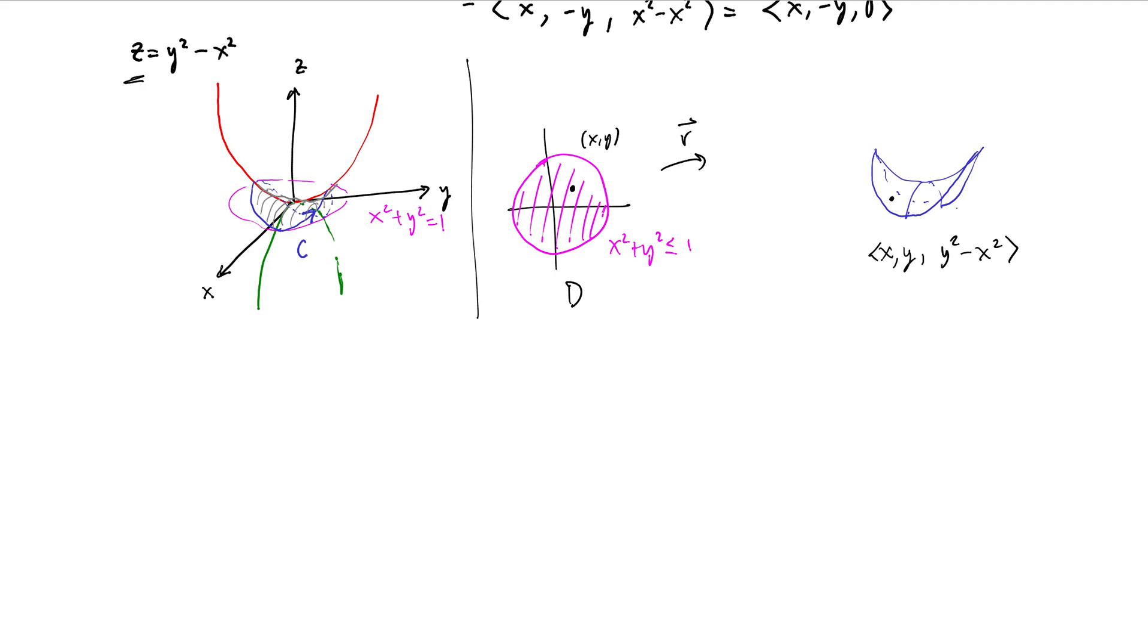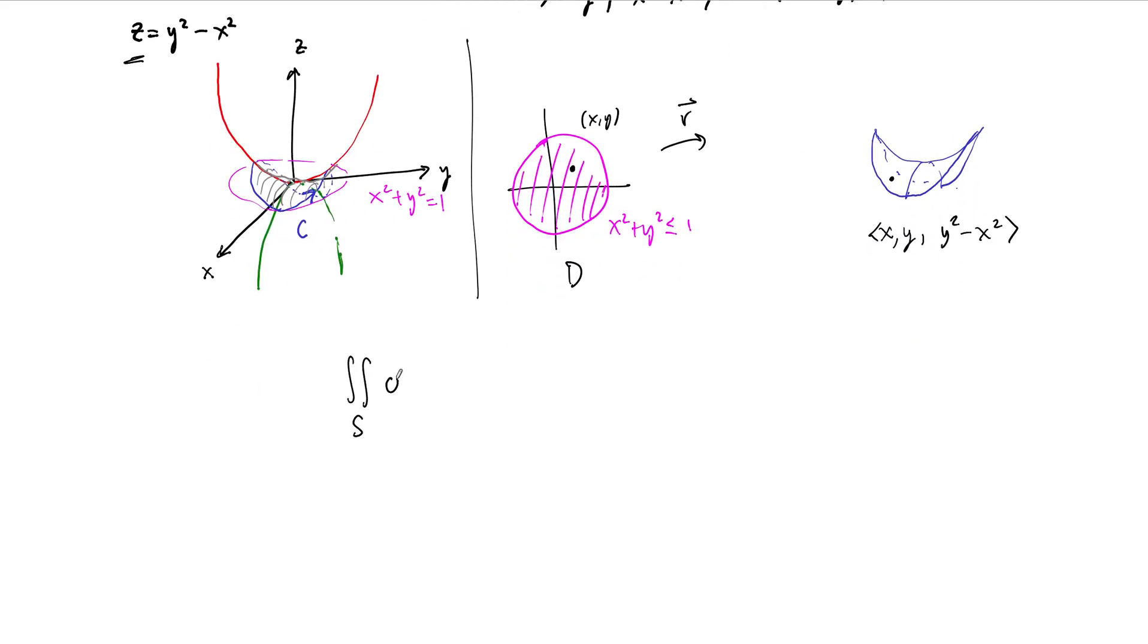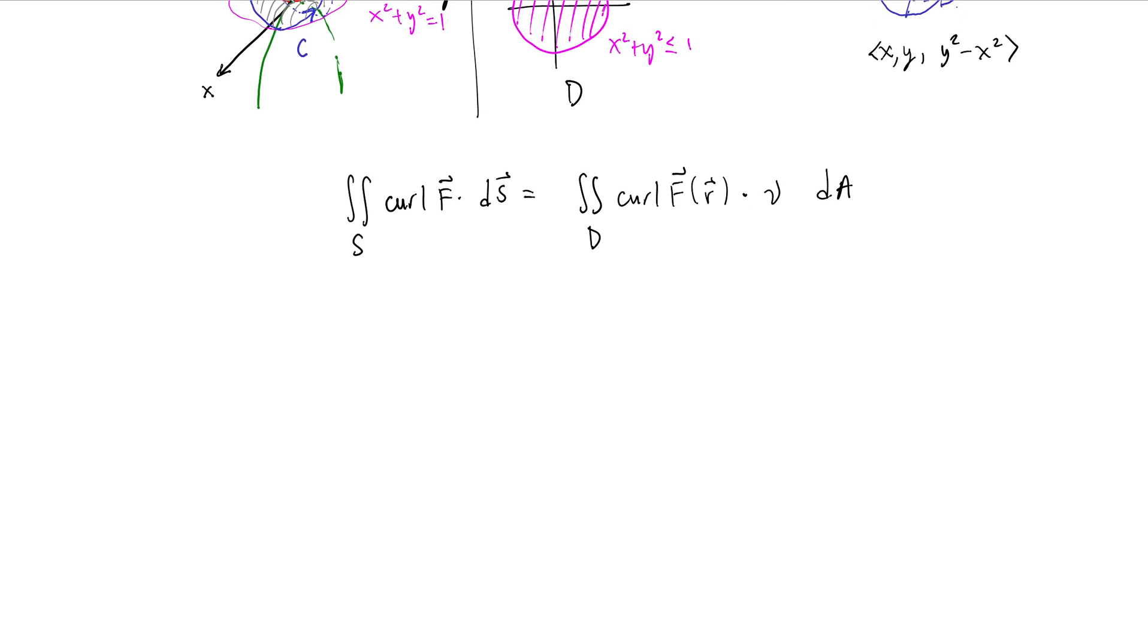And what we need to do is we need to compute the normal vector to the surface because the way that we're going to compute this is that the double integral along our surface of the curl of f dotted with ds is going to be computed on the parameter domain. So now that's starting to smell like polar coordinates. It's going to be computed as the curl of f of r dotted with the normal vector nu, dA. So integrated over the parameter domain over here. That means we need to compute nu. Nu is r sub x crossed with r sub y. So let's compute this by first writing our r again, and then we can get into the computation here.